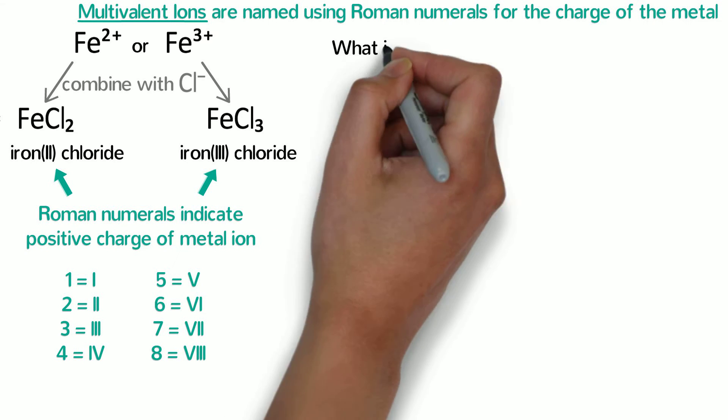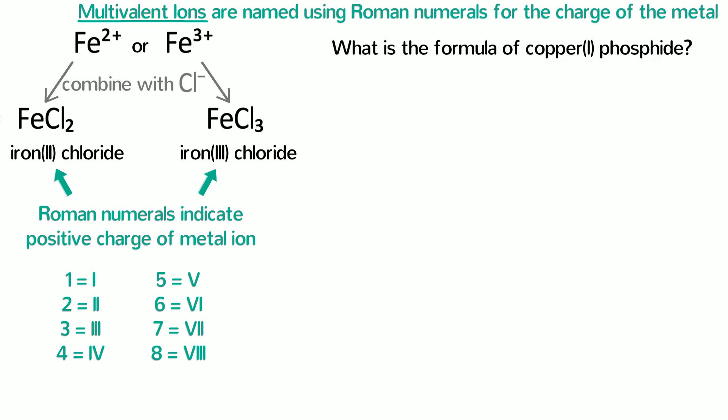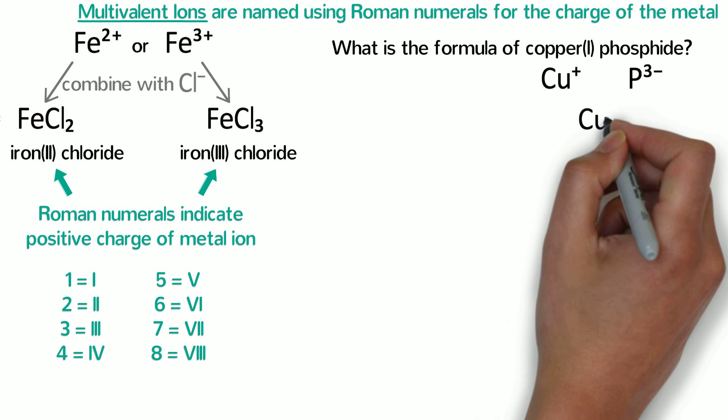Let's try a few examples. What is the formula of copper(I) phosphide? First we write down the ions. From its name, we know copper(I) has a positive 1 charge, so that's Cu+. Phosphorus has 5 valence electrons, so it will gain 3 electrons to make phosphide, which is P3-. Next, we can just switch the 3 and the 1, so the formula is Cu3P.